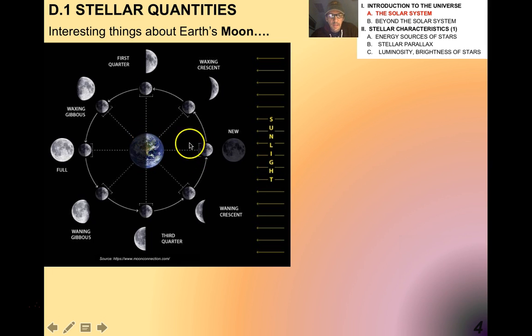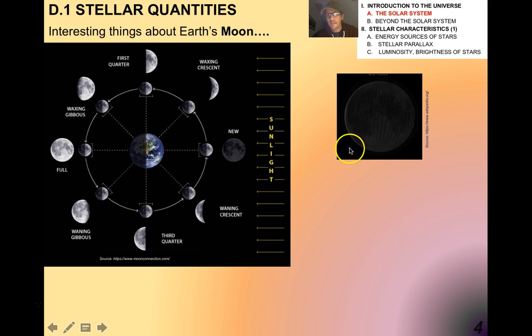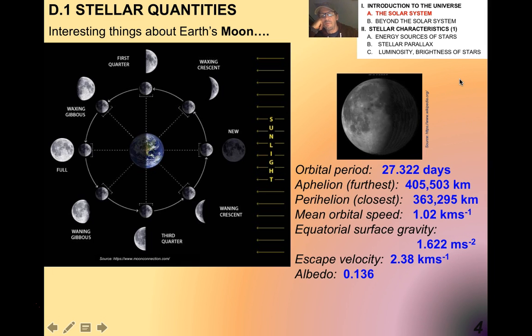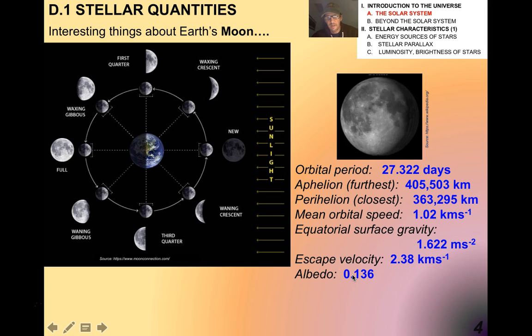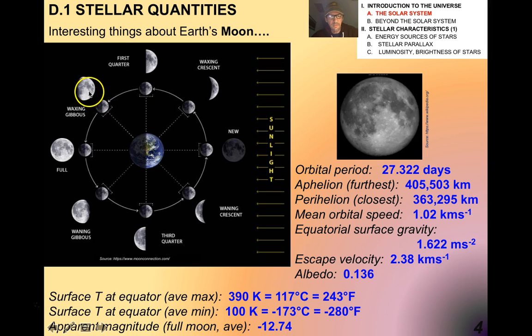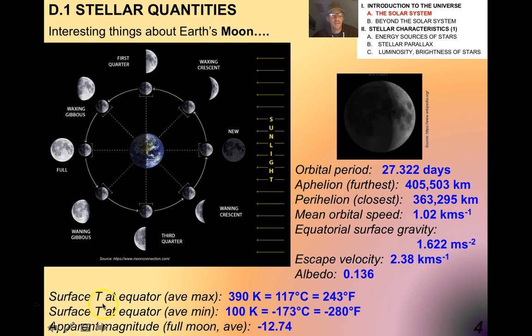This is called a lunar eclipse when the Moon goes into Earth's shadow. Solar eclipses occur when Earth goes into the Moon's shadow. The reason they don't occur every single month is because the elliptical plane of the Moon is slightly tilted. Otherwise we would have those occurrences every single month. Here's some data for the Moon. Orbital period is about 27 days. Aphelion is 405,000 kilometers. Perihelion is 363,000. That's a significant difference. Its mean orbital speed is only about a kilometer per second, very slow compared to Earth. Surface gravity is about 1.6 meters per second squared. Its albedo is very low because it's made of dark, dusty gray material.